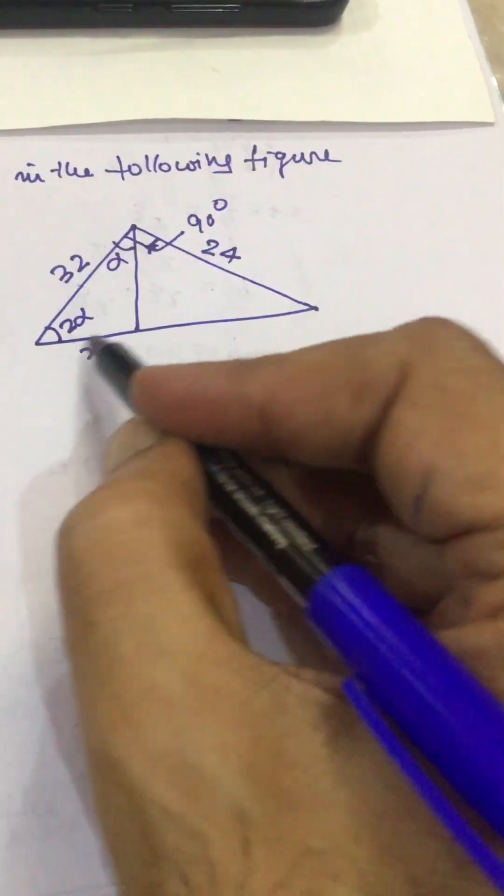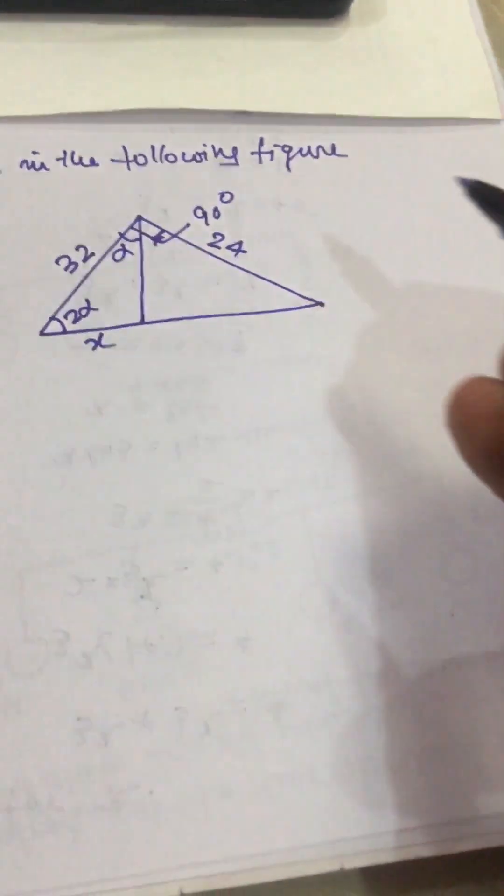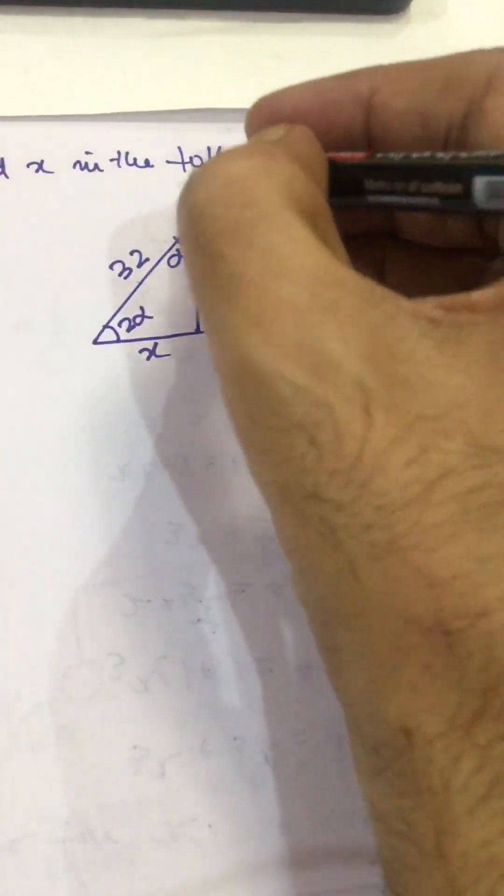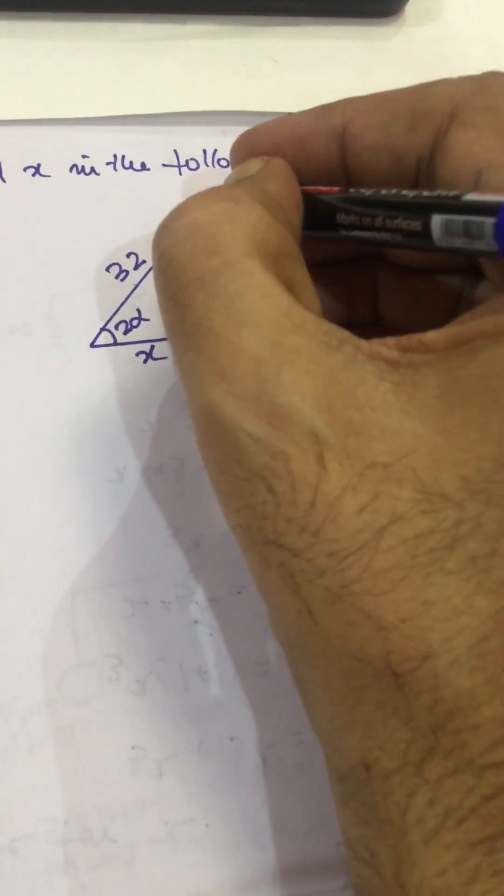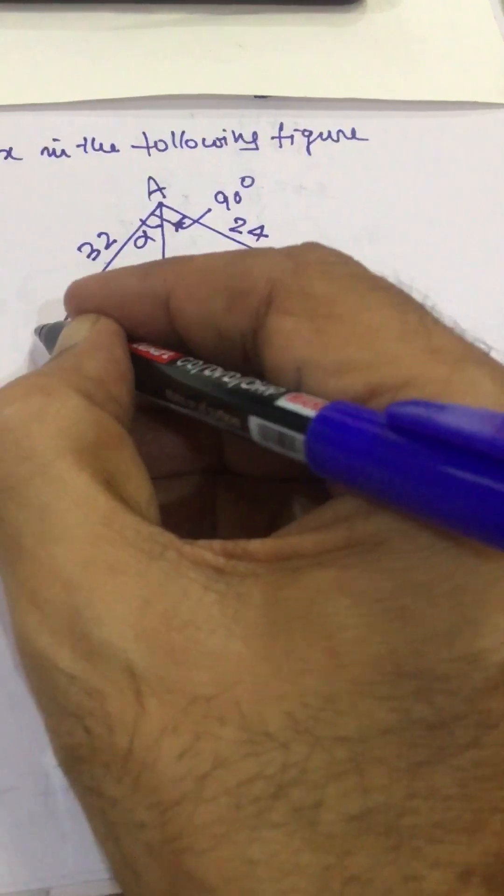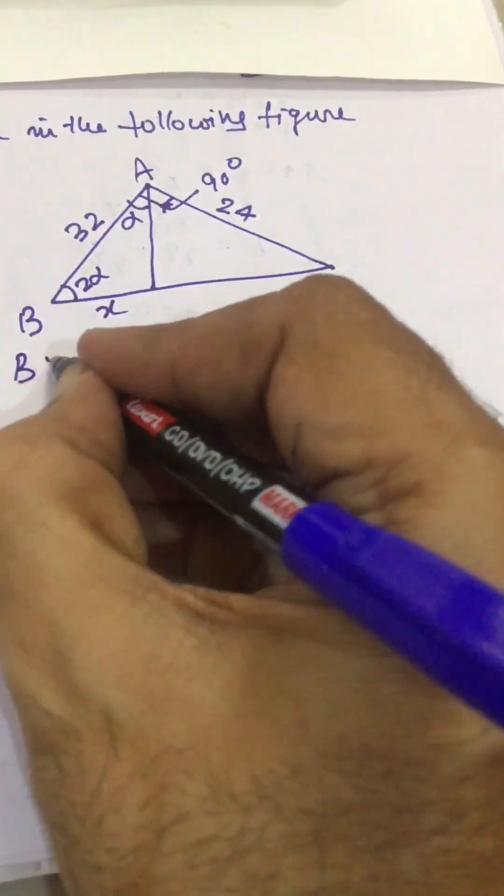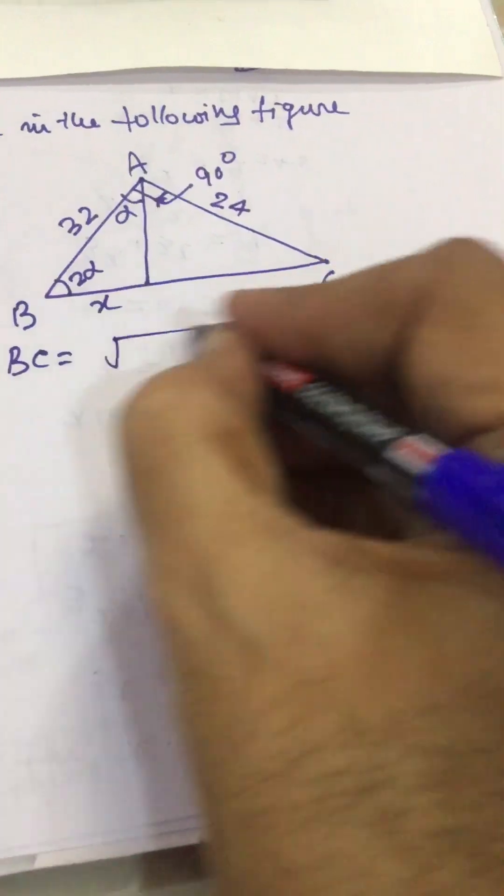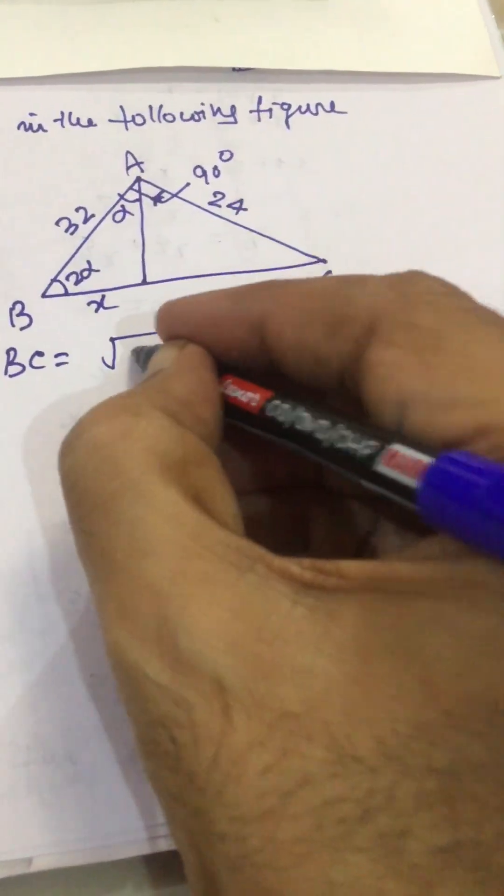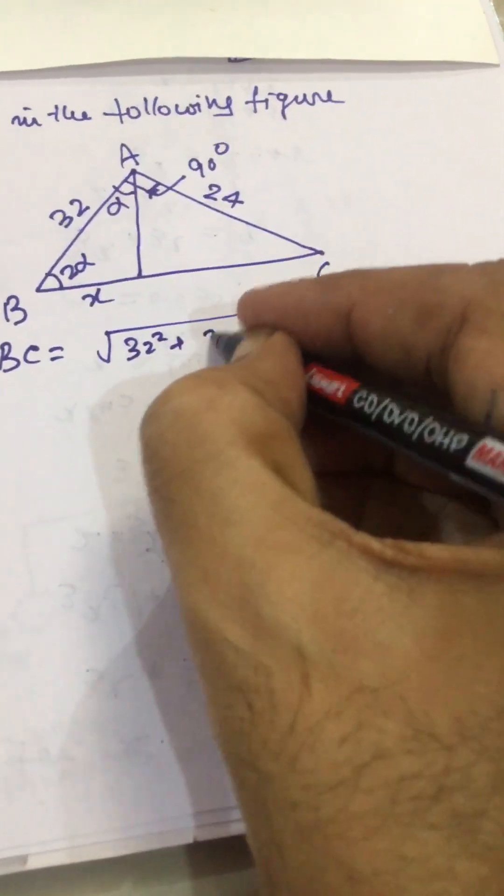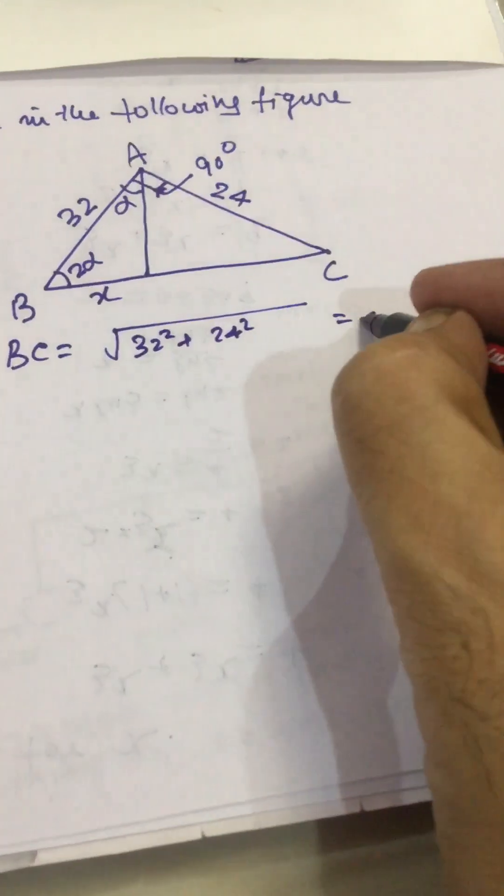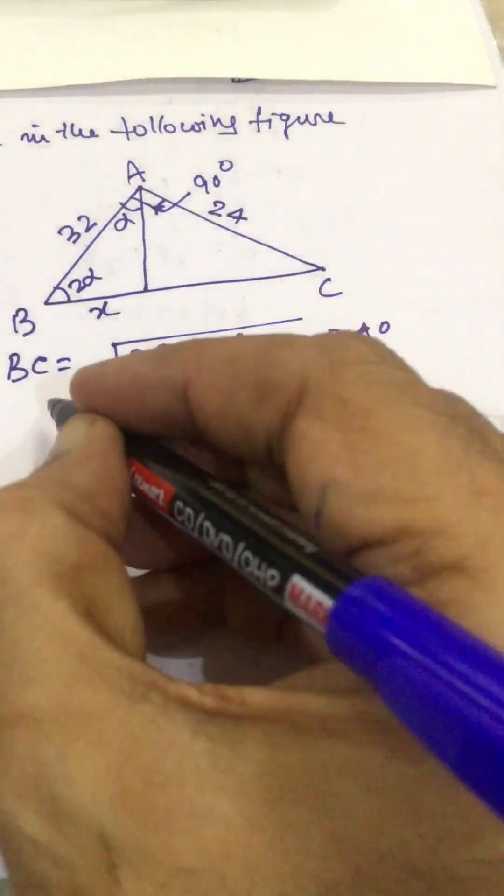And this is x, we have to find out this x. Let us mark various points and sides in this triangle. Let it be B and this C, A, B, C. So BC will be equal to square root of 32² plus 24², so this becomes 40.